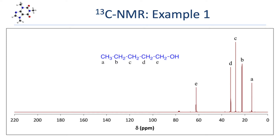Given what we know about the principles of NMR, we can assign specific carbons to each of those five peaks. Carbons A, B, C, and D are all generic — none are bonded to an electronegative atom or involved in pi bonds — so they show up in the generic region below about 50 ppm, which is exactly what we see. Because there are no pi bonds and only one electronegative atom (the alcohol oxygen), the closer a carbon is to that oxygen, the more deshielding it experiences. Carbon E, bonded directly to the oxygen, falls in the electronegative region between 50 and 100 ppm. Then D has the next highest chemical shift, followed by C, then B, and finally A with the lowest frequency.